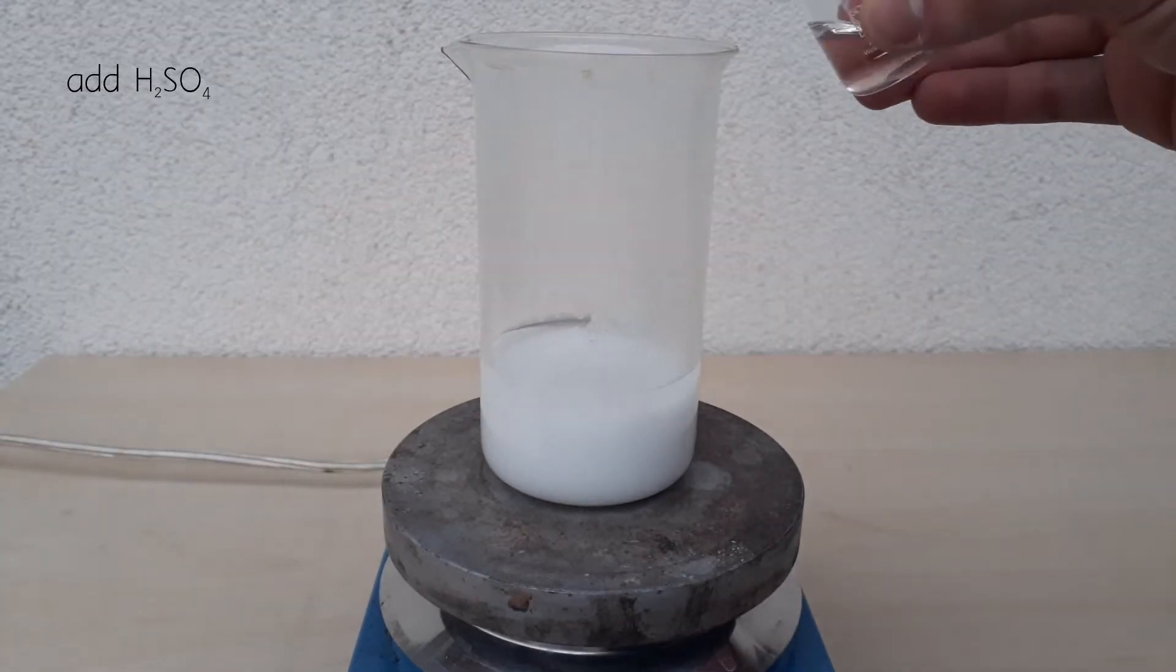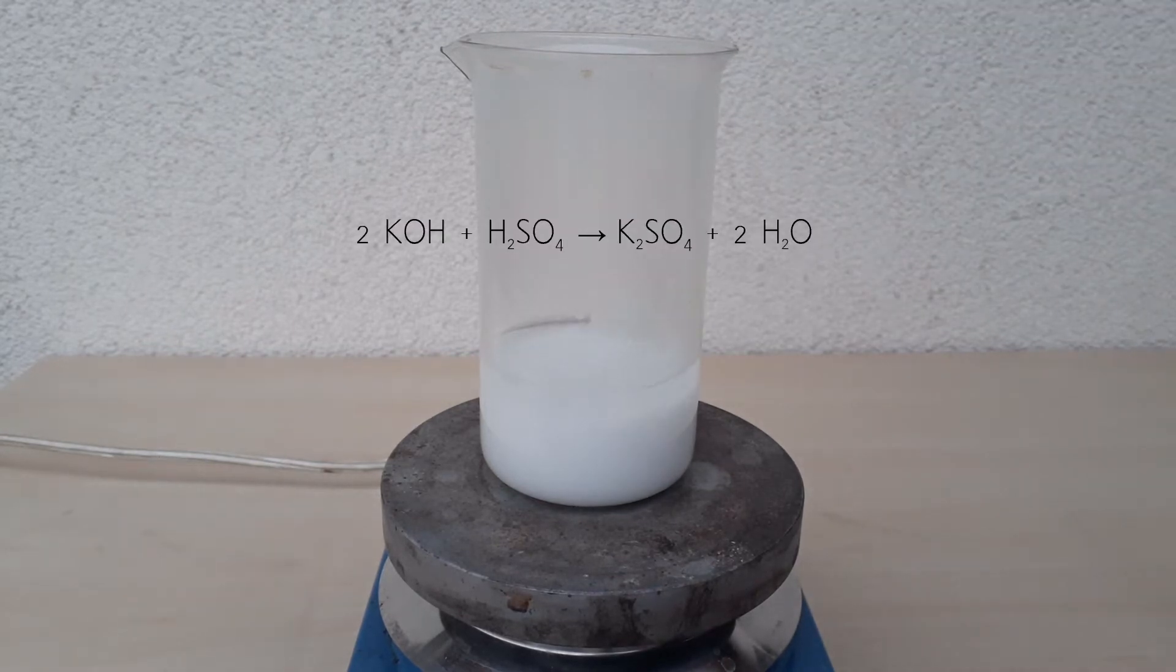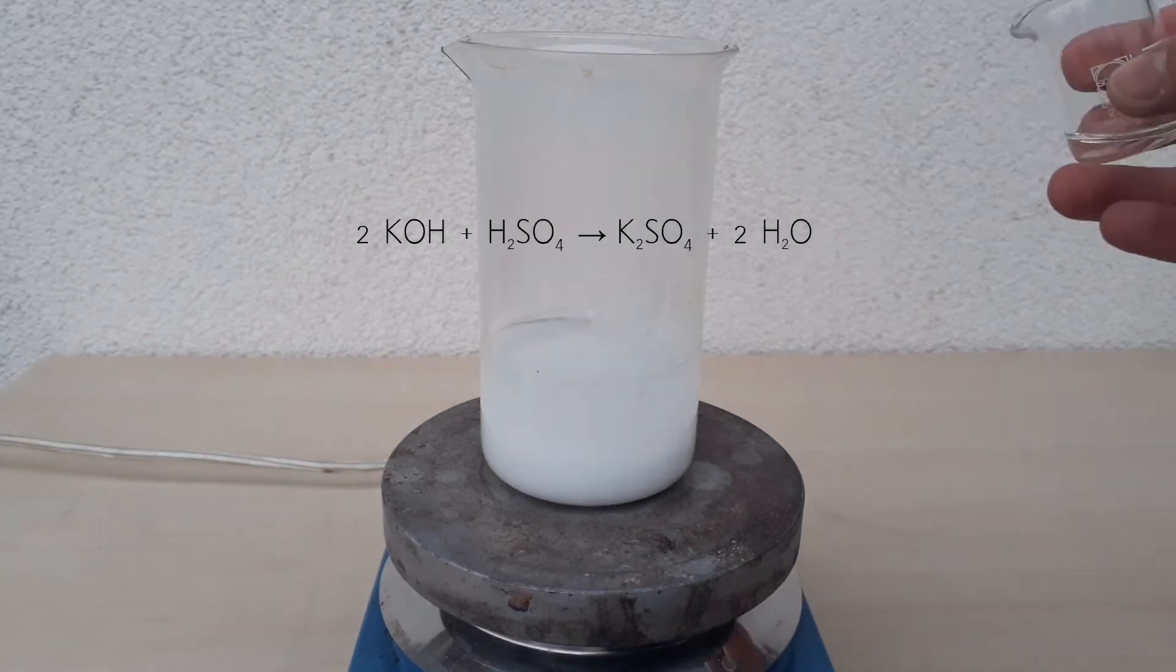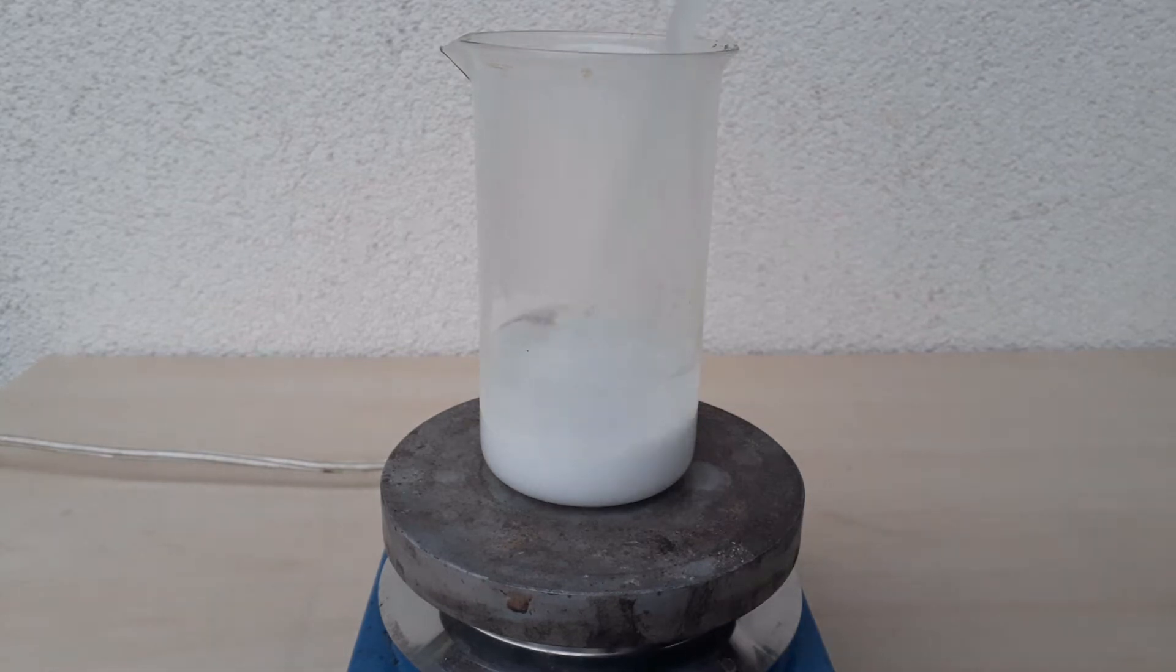Next step is to add sulfuric acid to this until the pH of the solution becomes neutral. Whilst adding you can see a lot of bubbles evolving, and this is spontaneous boiling due to the reaction being very exothermic.